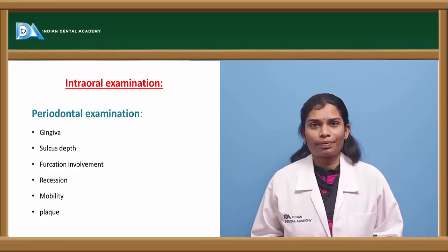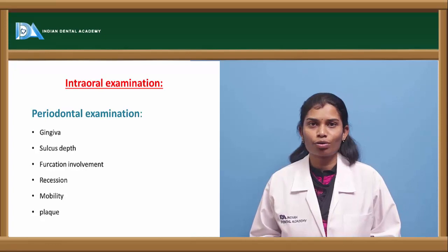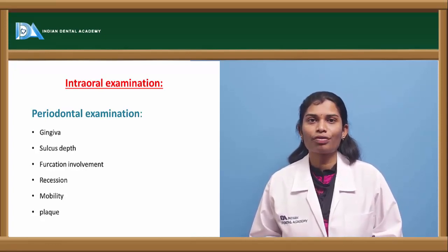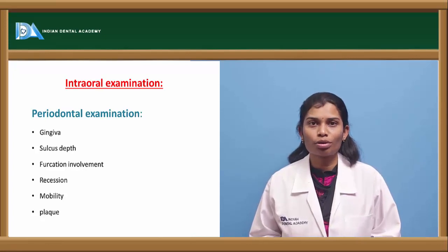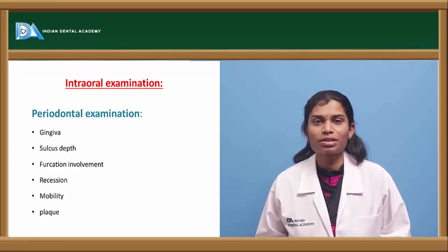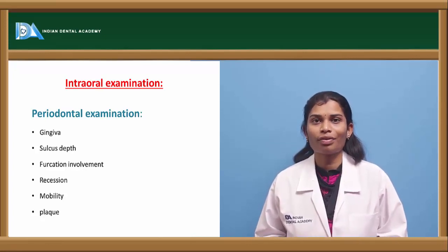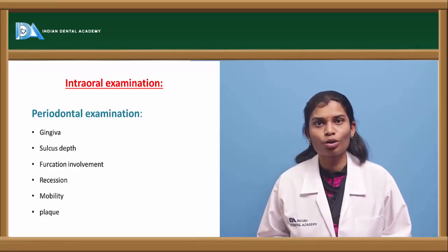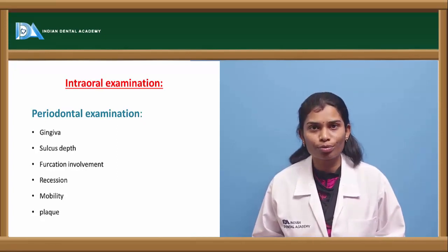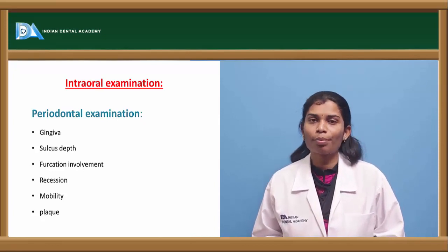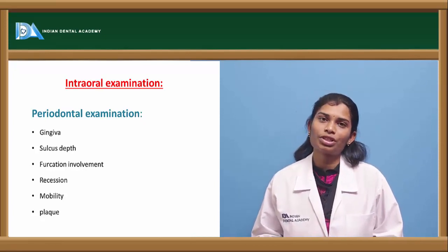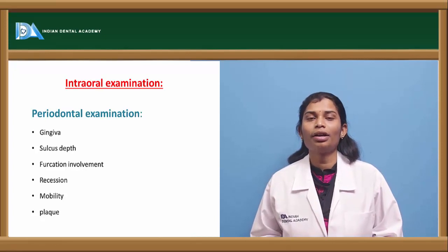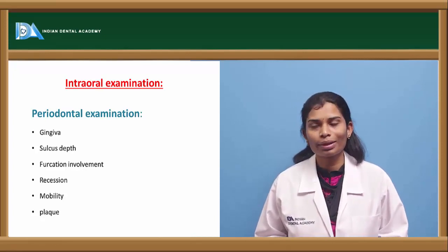Also check each tooth for mobility, because in abutment selection you need a strong tooth. A mobile tooth may not serve the purpose of an abutment. Record the grades of mobility for every tooth, whether it is being considered as an abutment or not. Take proper history of all the teeth.